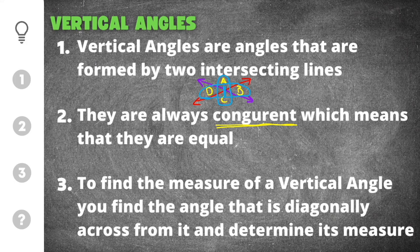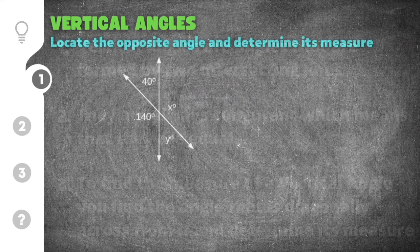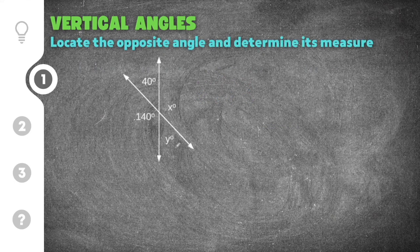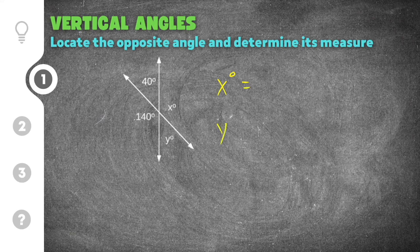Let's jump to our first practice problem. This problem gives us two intersecting lines with a point of intersection. It gives us an angle of 40 degrees and an angle of 140 degrees, then asks us for the measure of x and the measure of y.